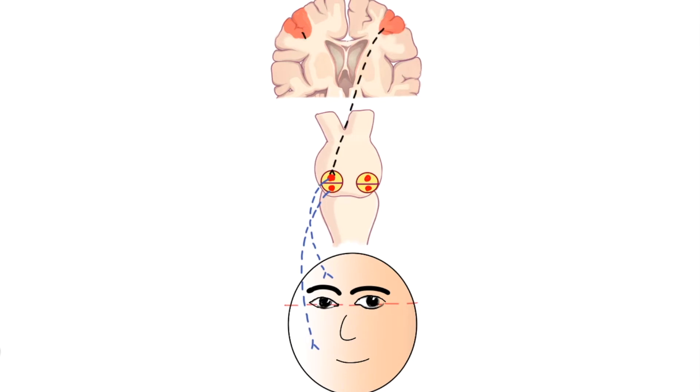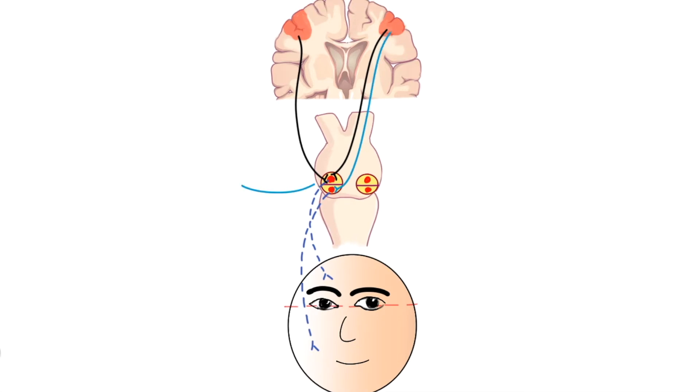The upper half of the nucleus receives innervation from not only the contralateral motor cortex, but also from the ipsilateral motor cortex. However, the lower half of the nucleus is innervated only by the contralateral motor cortex.